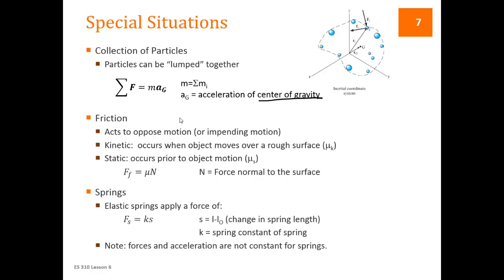Something else from statics that we'll factor into dynamics is friction. Friction always acts to oppose the motion — if an object is moving to the right, friction acts to the left. There are two types: kinetic friction, which occurs when an object moves over a rough surface, and static friction, which prevents an object from moving. You have static friction up until the point the object moves, and then kinetic friction after it starts moving.